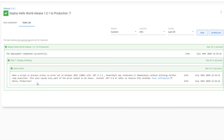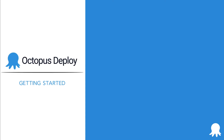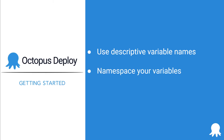Now it's your turn to create your first variable. Here are some recommendations to keep in mind as you do that in your own instance. Use descriptive variable names — not only so you know what a variable is used for, but also so that someone else looking at your deployment process will be able to understand it. Always namespace your variables. A variable named Password is very generic, while a variable named SQLServer.Admin.Password is readily identifiable for debugging. And lastly, make sure to use variables when appropriate. Variables save time and enable flexibility in your deployment processes.